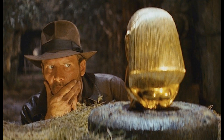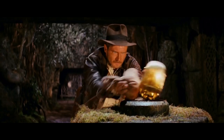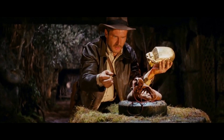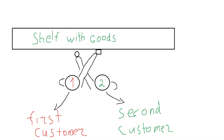Where does the system have algorithmic problems? I know only two of them. The first problem is very simple: an attacker can replace a product with an object of the same weight. The second problem: when two buyers take goods from neighboring places simultaneously, the system may link goods to the wrong person.